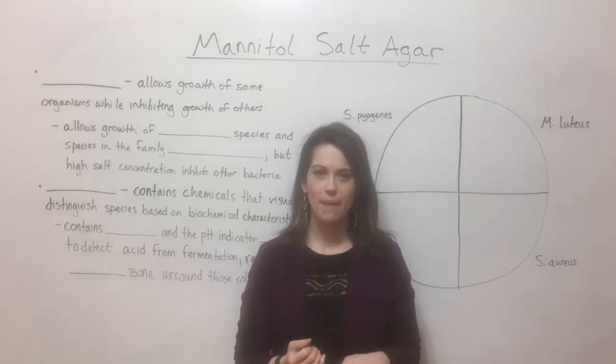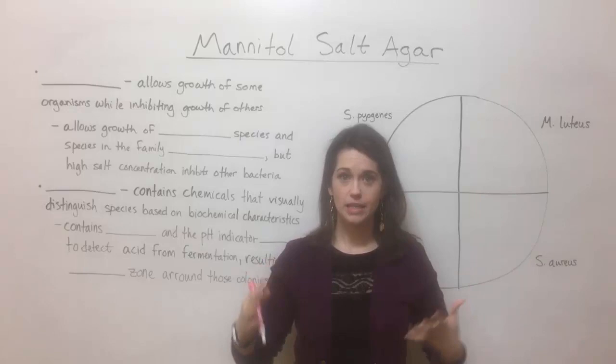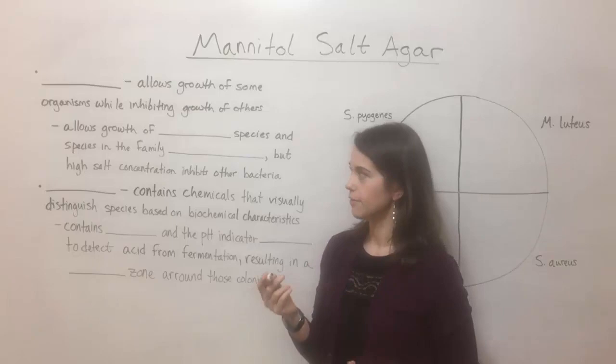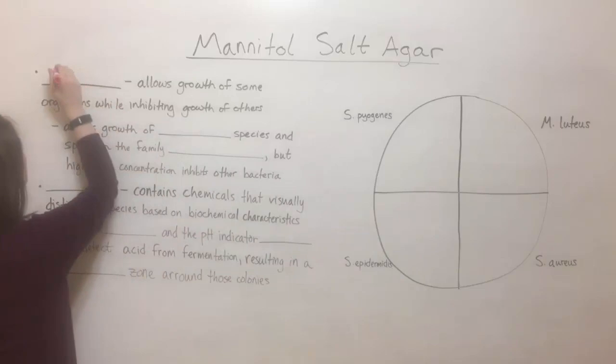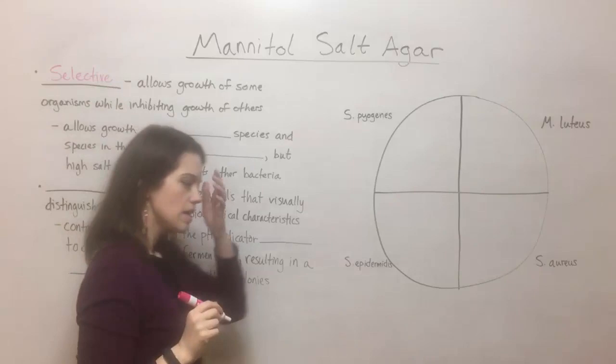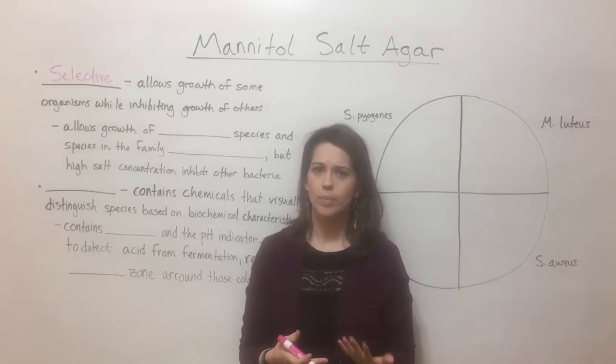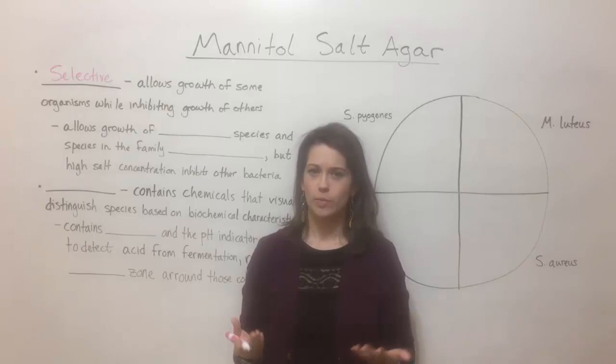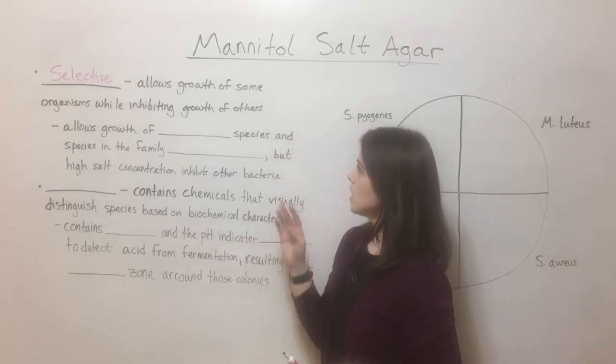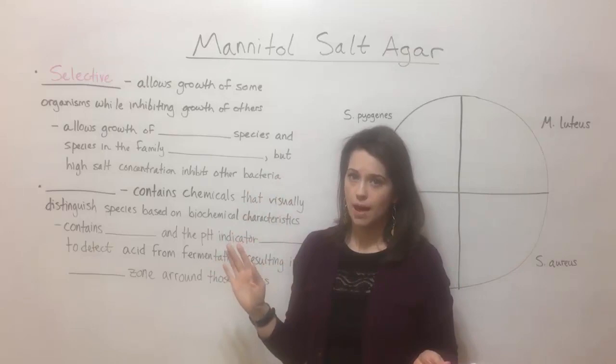Mannitol salt agar is a kind of bacterial growth media that has a few cool characteristics. The first is that it is a selective medium. Selective means that it allows the growth of some organisms while inhibiting the growth of others. There are other types of media that are non-selective, things like LB agar or nutrient agar, that if you expose them to environmental bacteria, lots and lots of different things will grow. But mannitol salt agar is selective — it allows some organisms to grow and not others.